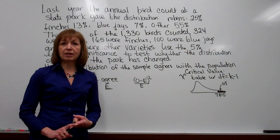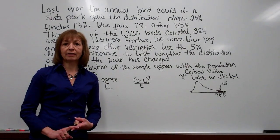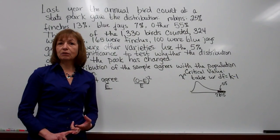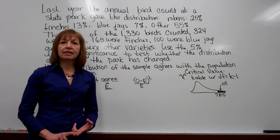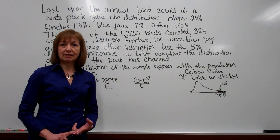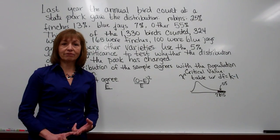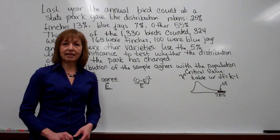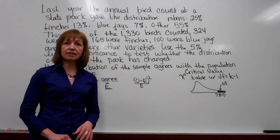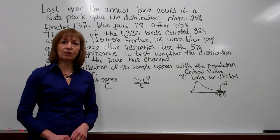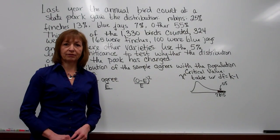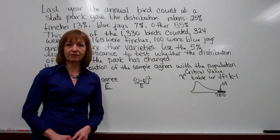The first thing we want to do is make sure that we randomly selected items from several different categories. Then we need to make sure that we have the expected frequencies to be at least five for each of the categories. Our hypothesis test is to see whether the current distribution of these several different categories conforms to or meets a known distribution. This is called goodness of fit.